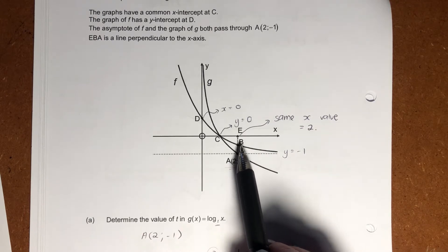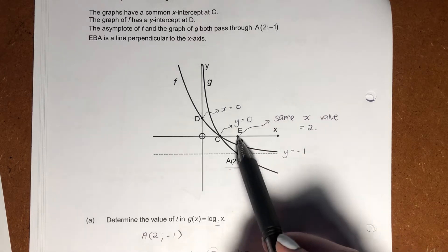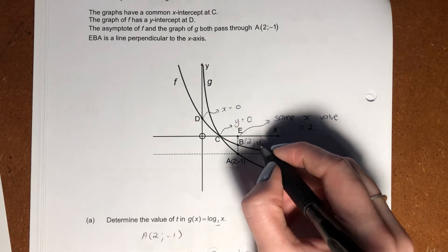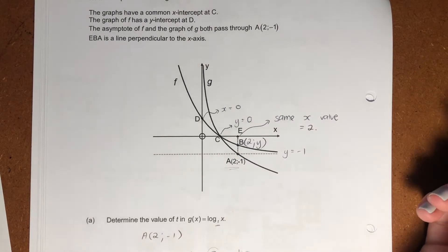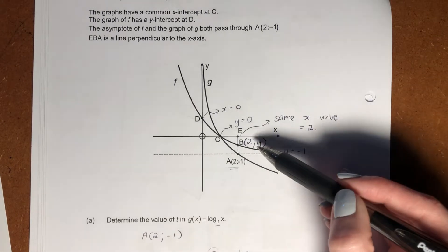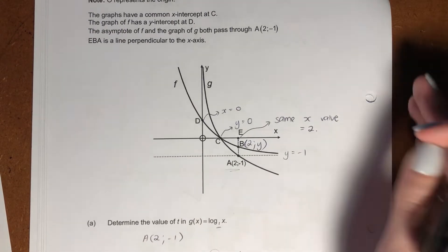However, we know that the X coordinate of B is going to be 2 because it's on the same perpendicular line as A. So we know that already that's 2. We just need to find the Y value there. B sits on our F of X line, so we can just sub in 2 and get the Y value and then find the length.